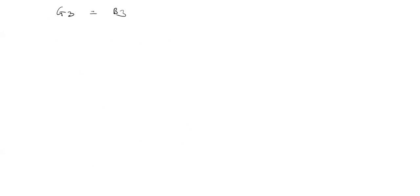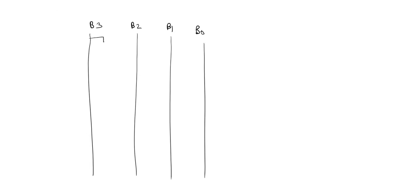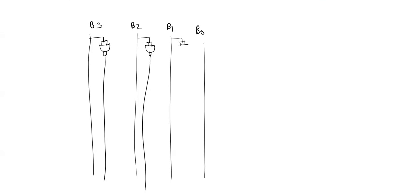I will implement these expressions by using NAND gates. The circuit will look like this. The common inputs are B0, B1, B2 and B3. I am using these to take the bar values. Now I am going to implement the NAND gate. These are the B0, B1, B2 and B3 inputs. I am using NAND gates to get the bar values. This NAND gate gives me B3 bar. Similarly, NAND gates give me B2 bar, B1 bar, and B0 bar.